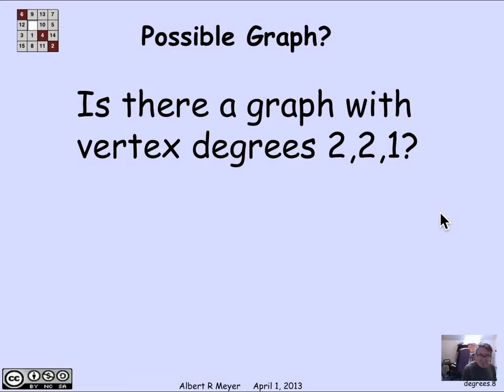So let's examine some properties of vertex degrees that are motivated by a simple example. Suppose I ask the question, is it possible to have a graph with vertex degrees of 2, 2, and 1? So implicitly, it's a three vertex graph. And one vertex has degree 2, another has degree 2, and one has degree 1.